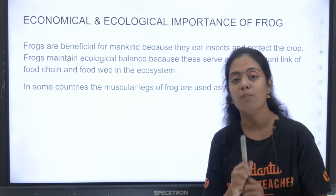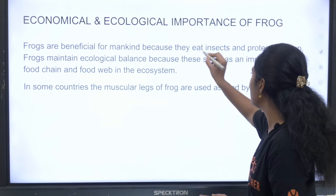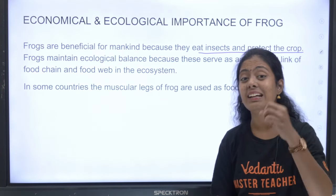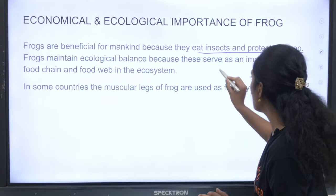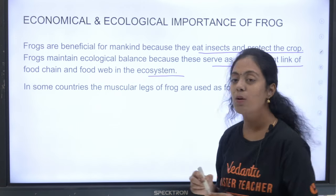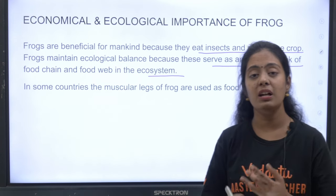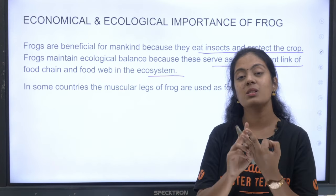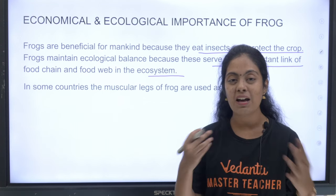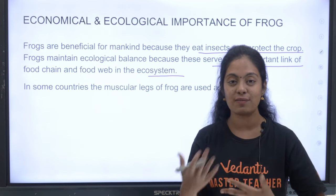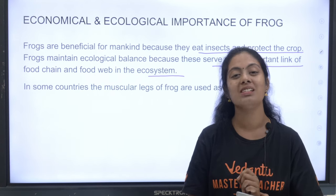Ecological importance: frogs are beneficial for mankind. They eat insects and protect crops, and they maintain ecological balance by serving as an important link in food chains and food webs in the ecosystem. We have covered this entire chapter — digestive system, circulatory system, neural system — all in about 30 to 35 minutes. Stay tuned for more bio learning. Thank you!